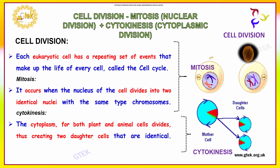You can see here how mitosis occurs. The cytoplasm for both plant and animal cells divides, thus creating two daughter cells that are identical. Here you can see the cytoplasm — this is the mother cell and this is the daughter cell.